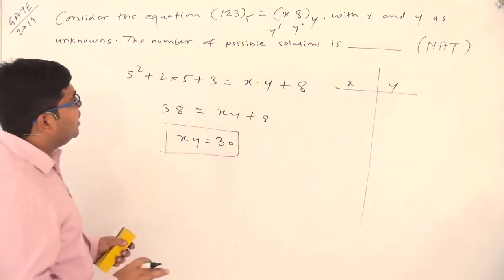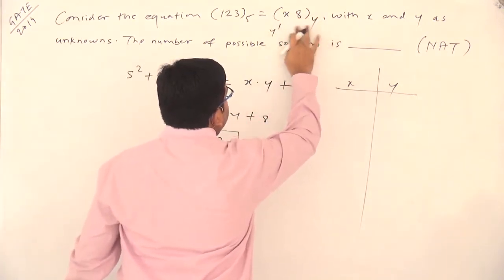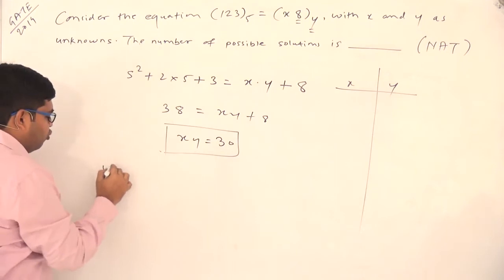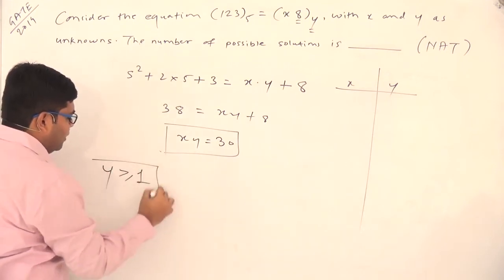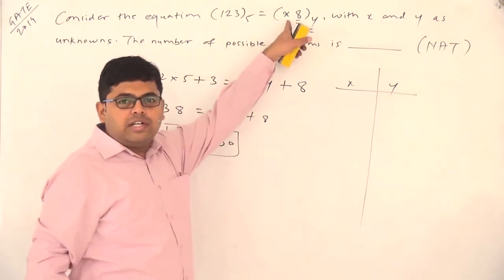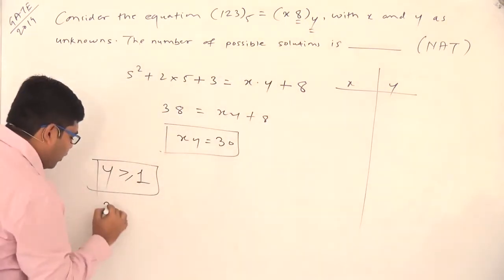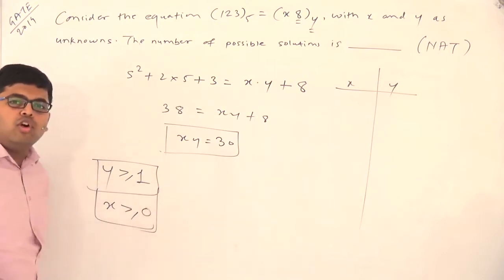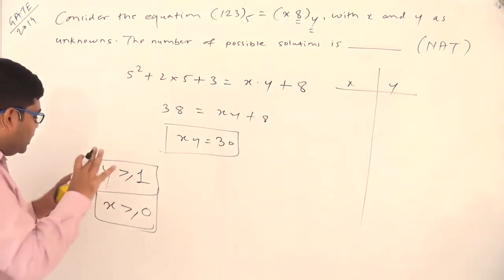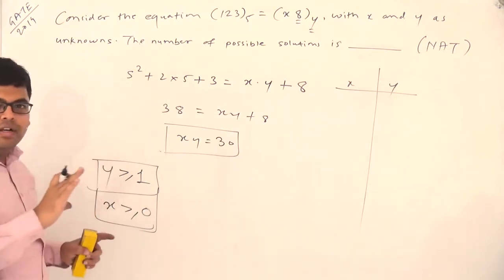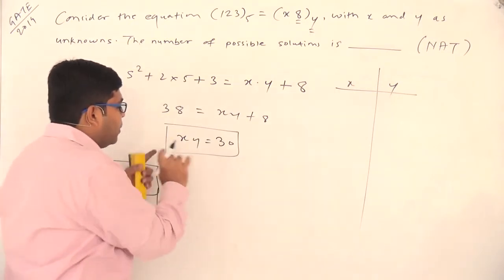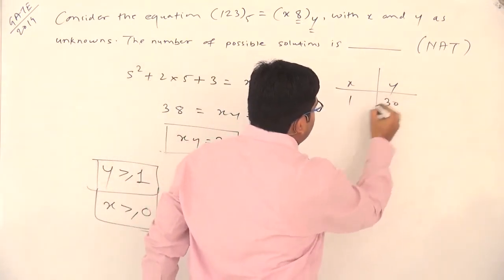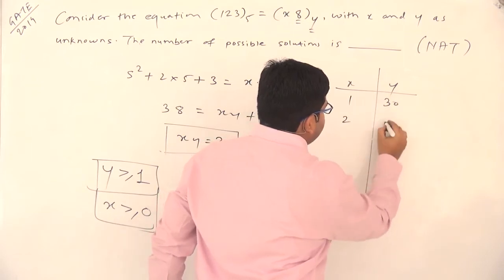The number system has base y, and the digit 8 is present. Since y is the base, y must be greater than or equal to 1. Second, x is a digit, and digits cannot be negative, so x must be greater than or equal to 0. These are the restrictions on x and y. We will now split 30 as a product of x and y.